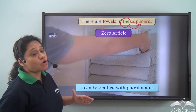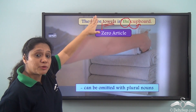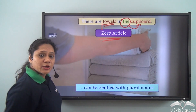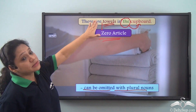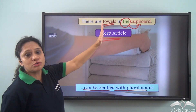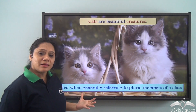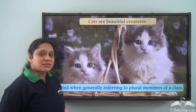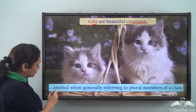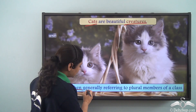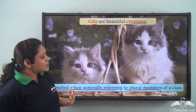In 'There are towels in the cupboard,' we use 'the' with 'cupboard' but no article before 'towels.' This is another case of zero article — articles can be omitted with plural nouns. Similarly, 'Cats are beautiful creatures' is an example of zero article, where both 'cats' and 'creatures' are used without any article, showing that articles can be omitted when generally referring to plural members of a class.